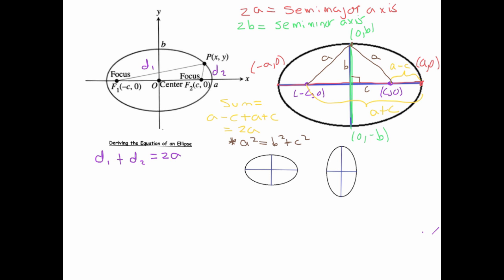By the definition of an ellipse, we know that d1 plus d2 equals that constant sum, which we know is 2a. Now d1, using the distance formula, is just the square root of (x minus negative c), which is (x plus c) squared, plus y squared.